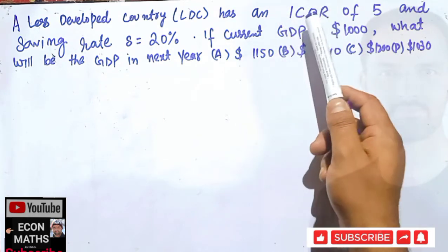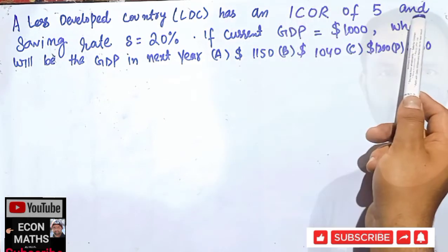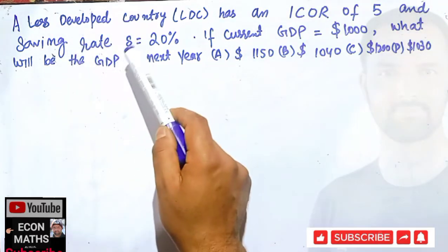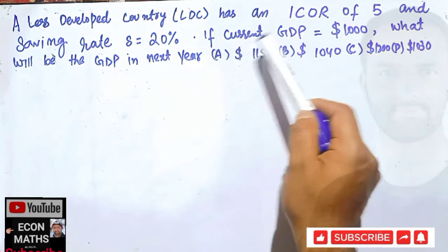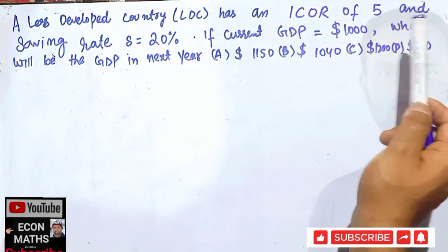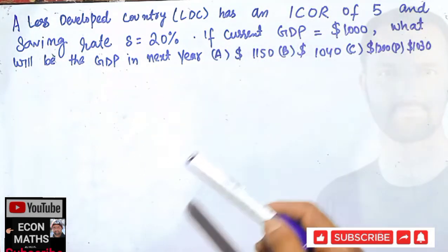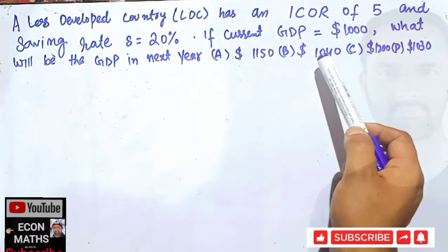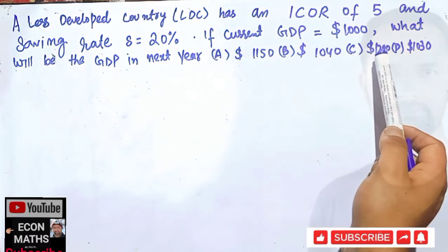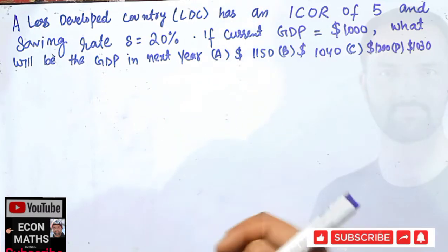to produce one unit of output, and saving rate in this country is equal to 20%. If current GDP is $1000, what will be the GDP next year? The options are $1150, $1040, $1200, or $1030. Okay, so we will see how to solve this.